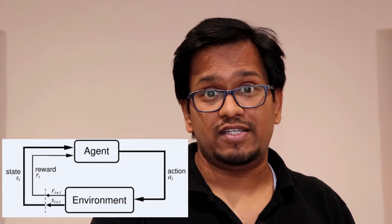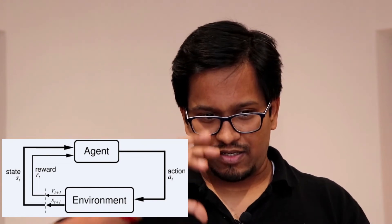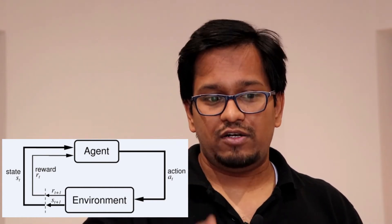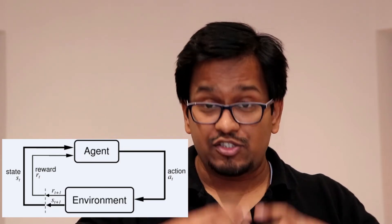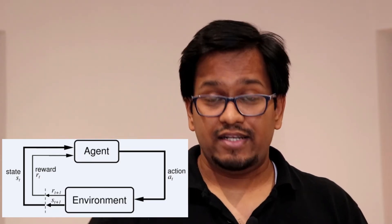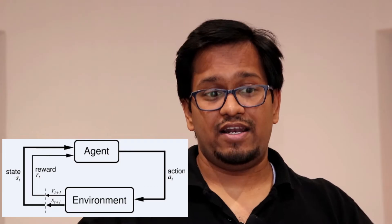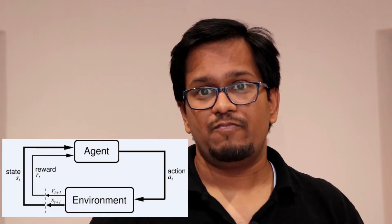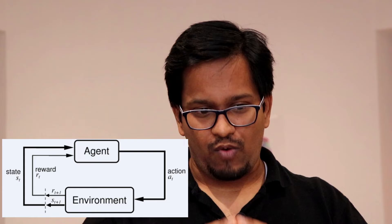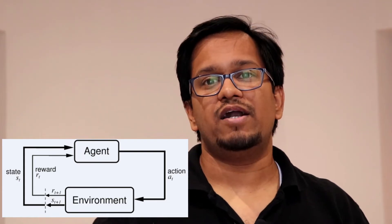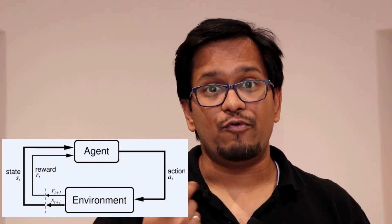Let's talk about the agent. The agent is the main decision maker in reinforcement learning or the Markov Decision Process. It basically interacts with the environment — it takes an action in the environment looking at the current state or current situation of the environment, applies that action, and the environment or the system moves to a different state. Going from one state by taking a particular action, it gets some reward from the environment.